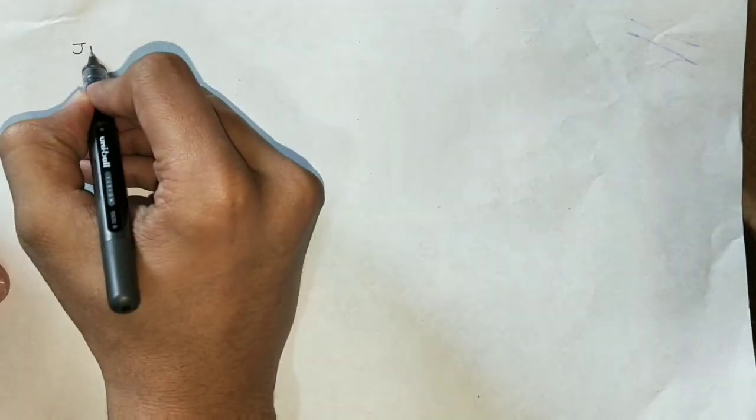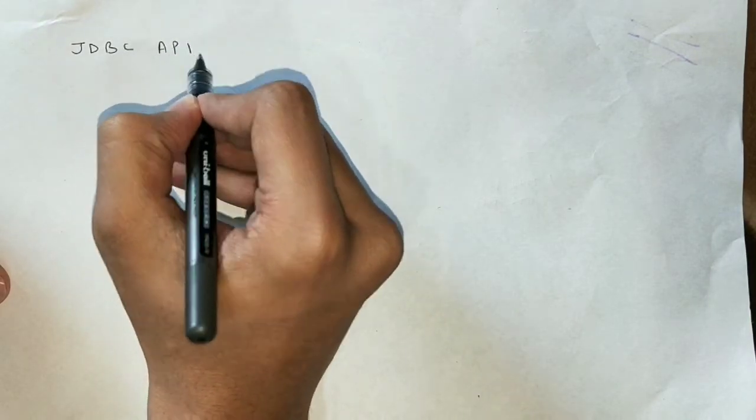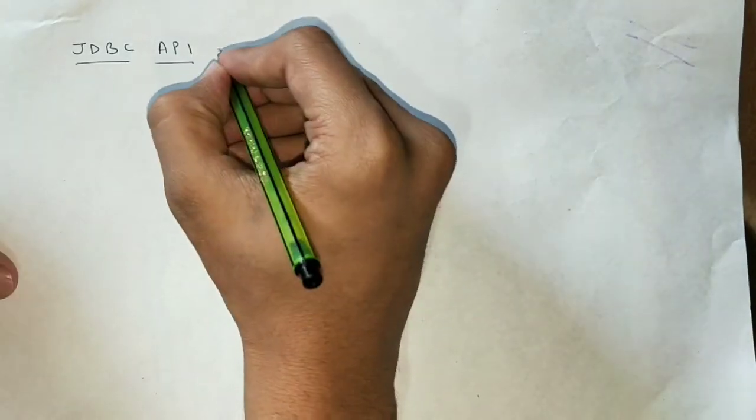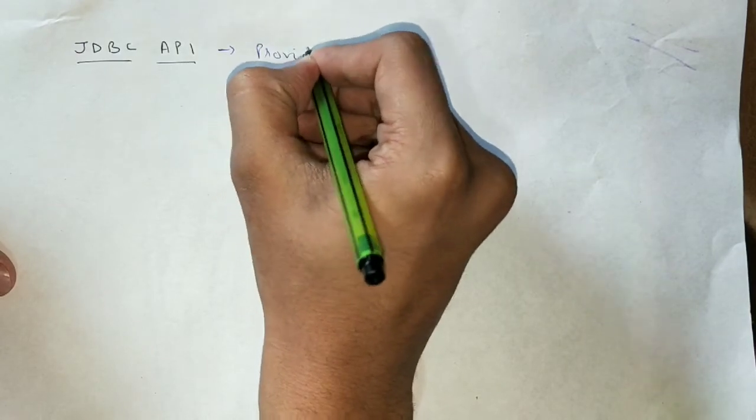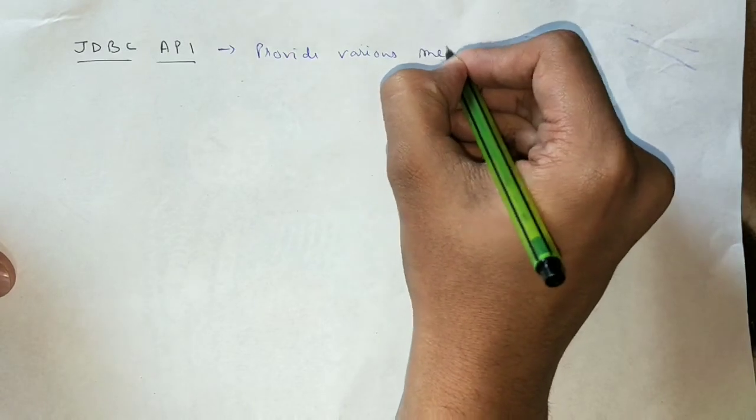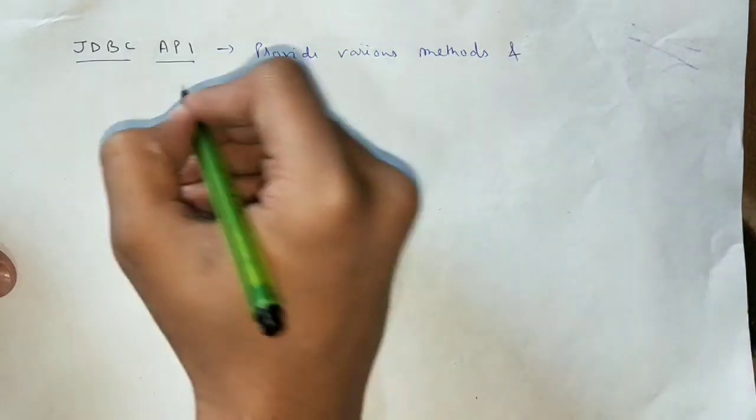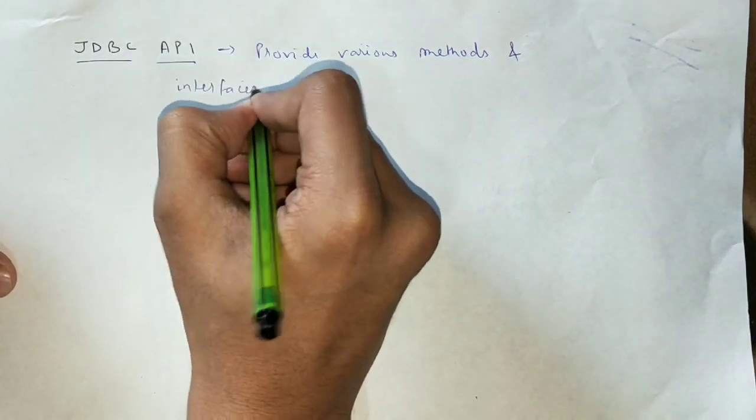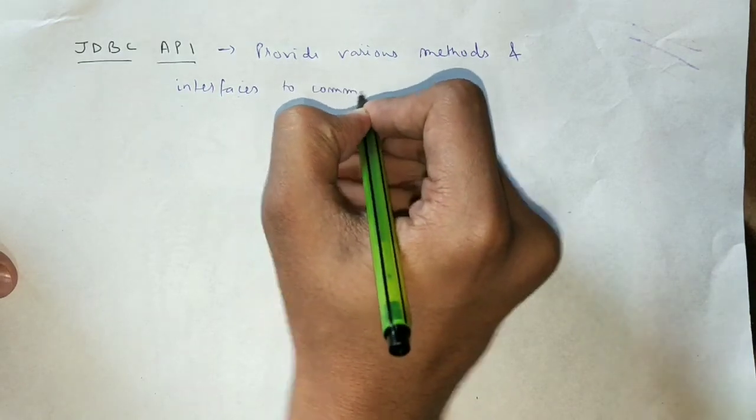Now let's see JDBC API. It provides various methods and interfaces to communicate with database. Basically it is providing application to JDBC driver manager.